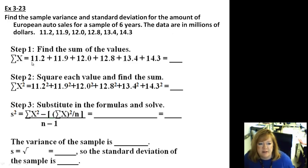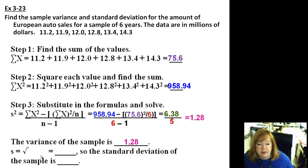Alright, so let's take a look at this one. Find the sample variance for the amount of European auto sales. And they're going to use the shortcut formula here. So they take all the data values and they just add them up. So they get the sum is 75.6. Then they square each of these and then add them. That's 958.94. And then we're substituting them in the formula. So the sum of x squared, that means square first and add up, is 958.94. This one is the sum of the x's, 75.6. And we're going to have to square that and then divide by 6. 6 is the number in our data set. So we'd have 6 minus 1 there. So you get 6.38 over 5. The variance of the sample is 1.28. Then you take the square root of that puppy and you got your standard deviation, 1.13.